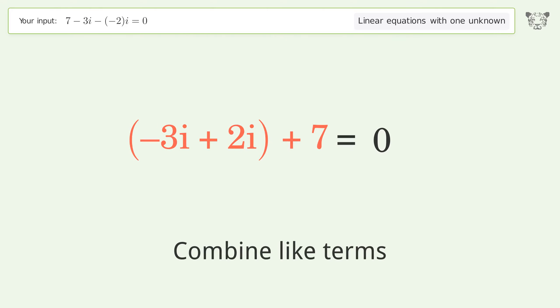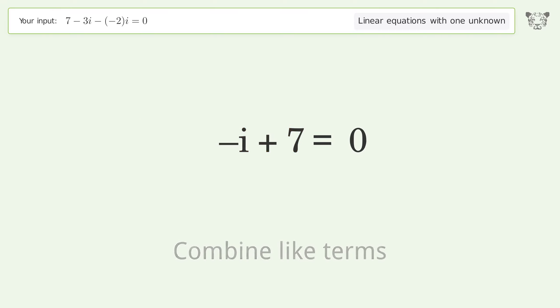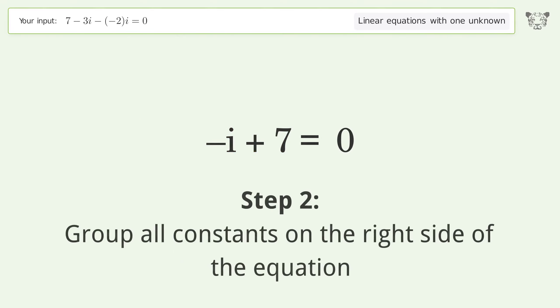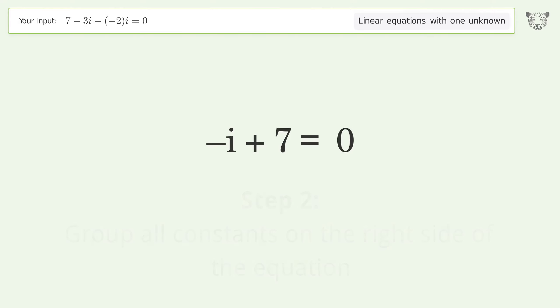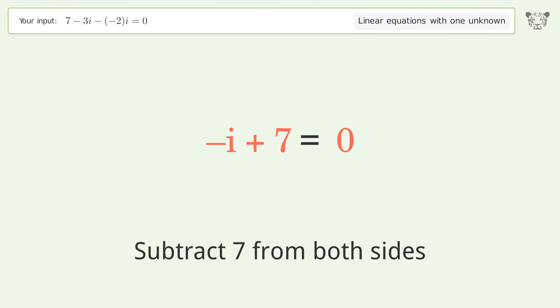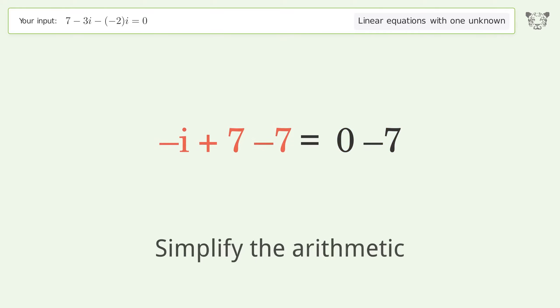Combine like terms. Group all constants on the right side of the equation — subtract 7 from both sides. Then simplify the arithmetic.